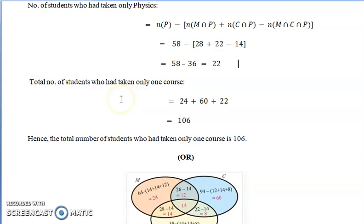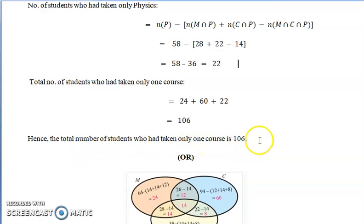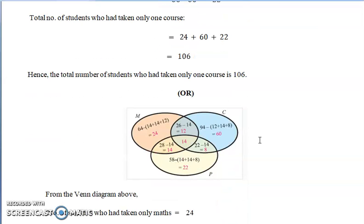Similarly, finding for physics using the analogous formula gives 22. So finally, the total number of students who had taken only one course is the sum: mathematics only (24) + chemistry only (60) + physics only (22) = 106.